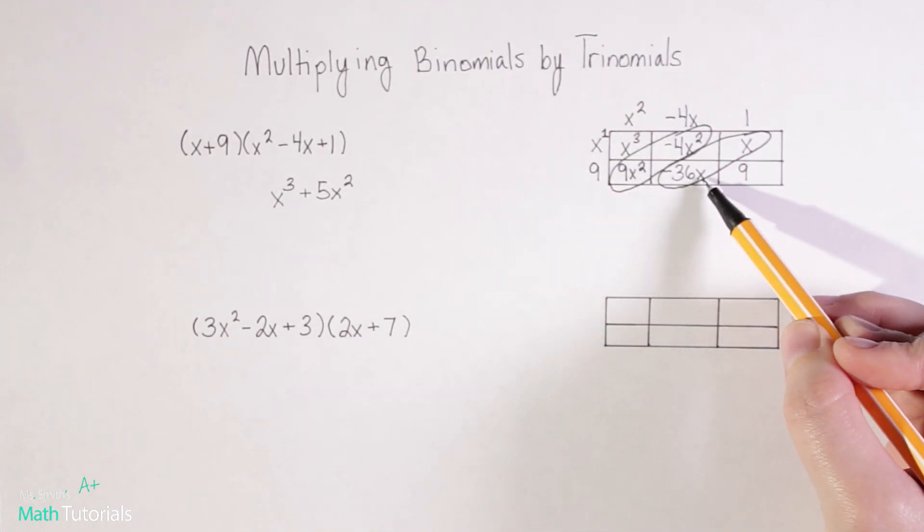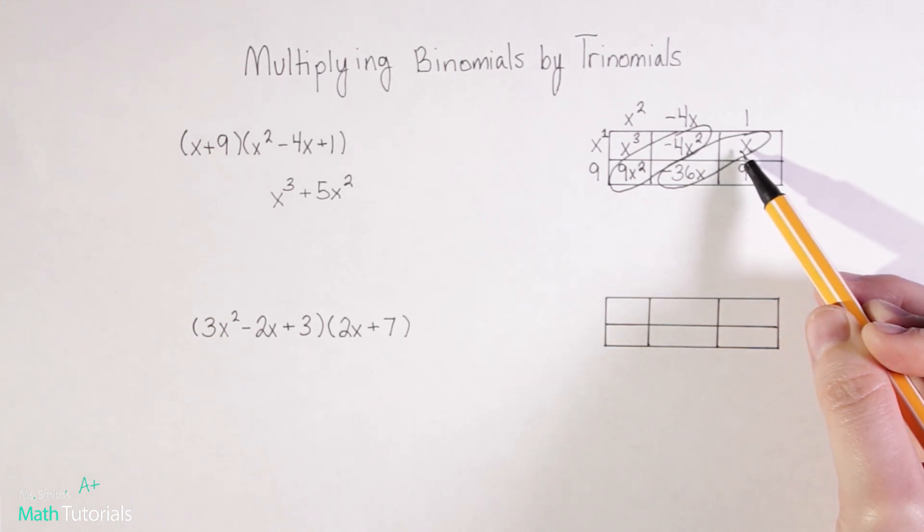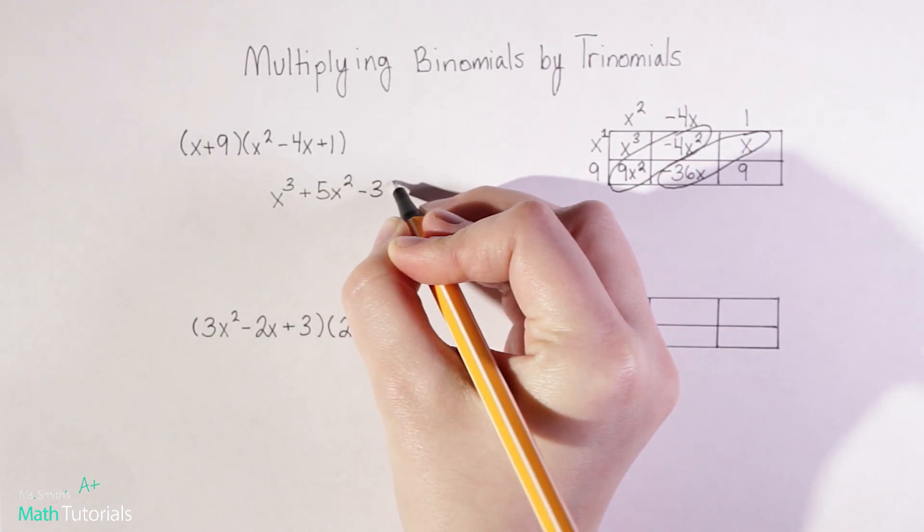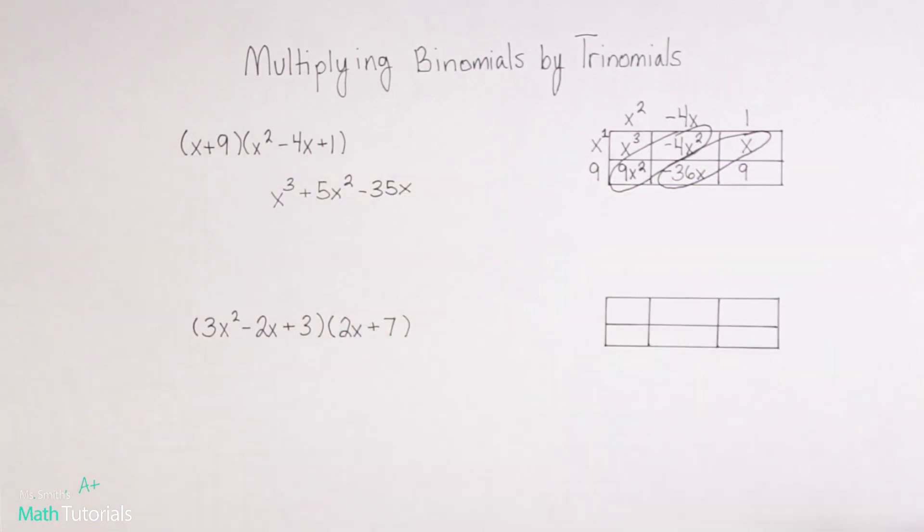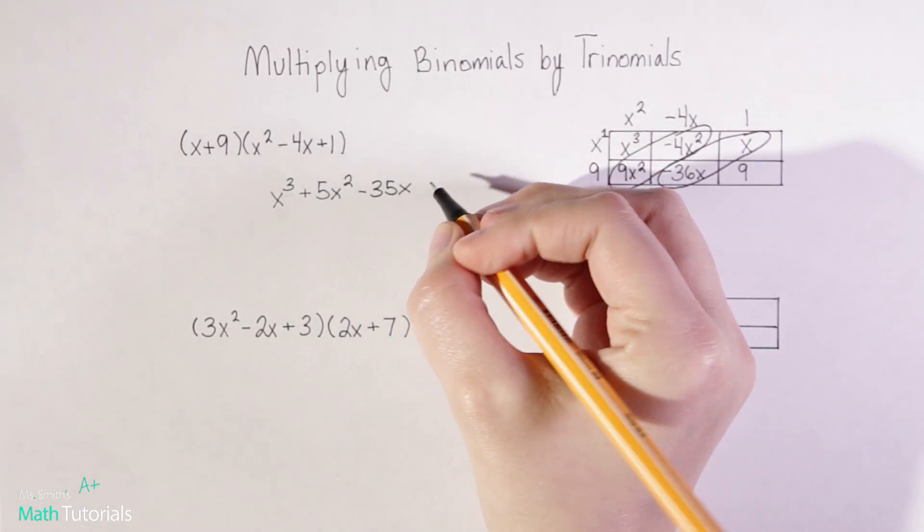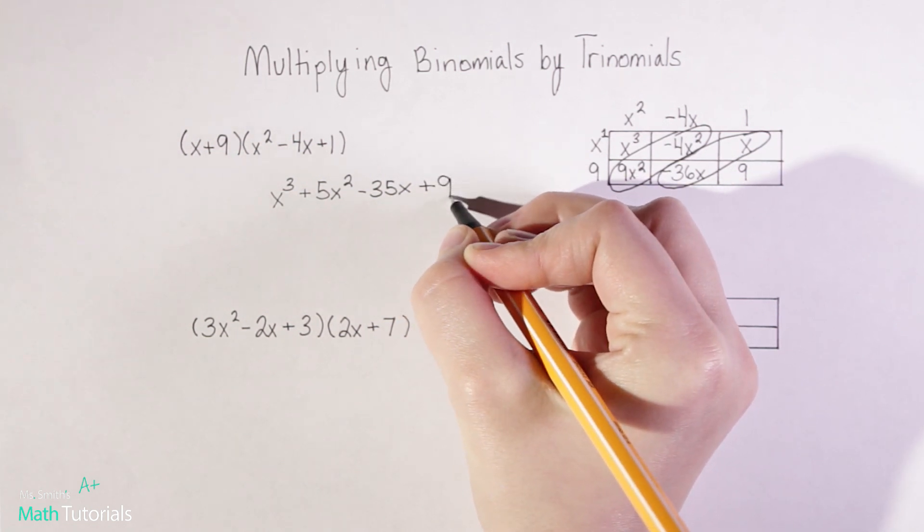Next, we've got negative 36 x plus one x. So that would be negative 35 x. And lastly, I have my constant positive nine, there's nothing to combine that with. So it just hangs out.